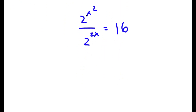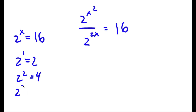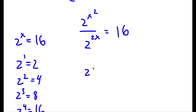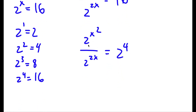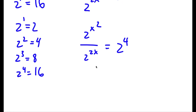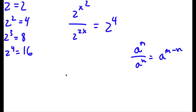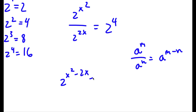Now, as you can see, both terms have a base of 2. So I'm going to convert 16 into a term with a base of 2. 2 to the power of 1 is 2, 2 squared is 4, 2 cubed is 8, and 2 to the power of 4 is 16. So I'm going to change 16 to 2 to the power of 4. Now all our terms are in base 2. Using the rule a to the power of m over a to the power of n equals a to the power of m minus n, I get 2 to the power of x squared over 2 to the power of 2x equals 2 to the power of x squared minus 2x, which is equal to 2 to the power of 4.